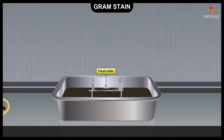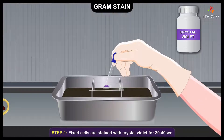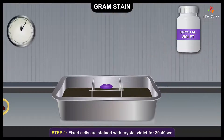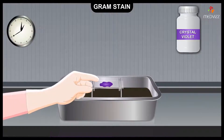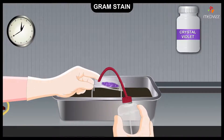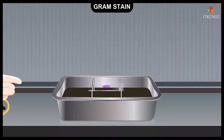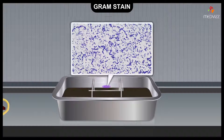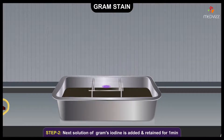The fixed cells are then stained with the basic dye crystal violet for 30 to 40 seconds. The slide is then rinsed with water to remove excess stain. At this point, all cells appear purple under the microscope.